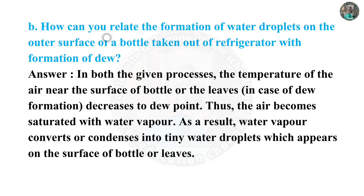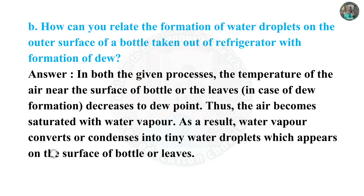Question 6b: How can you relate the formation of water droplets on the outer surface of a bottle taken out of a refrigerator with the formation of dew? In both processes, the temperature of the air near the surface of the bottle — or the leaves in the case of dew — decreases to the dew point, and the air becomes saturated with water vapor. As a result, water vapor condenses into tiny water droplets which appear on the surface of the bottle or leaves.